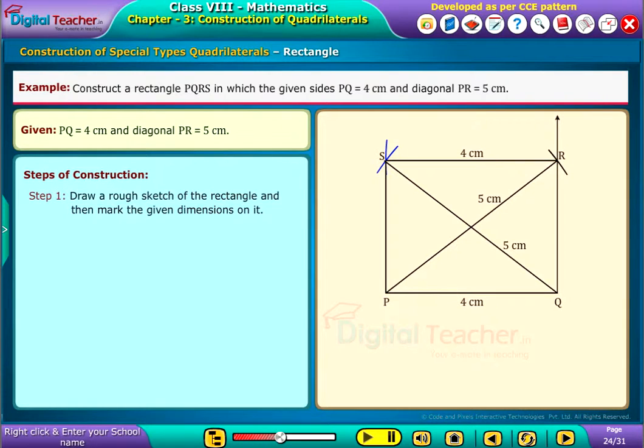In rectangle PQRS, as side PQ equals 4 centimeters, SR is also equal to 4 centimeters. And as diagonal PR equals 5 centimeters, QS is also equal to 5 centimeters.